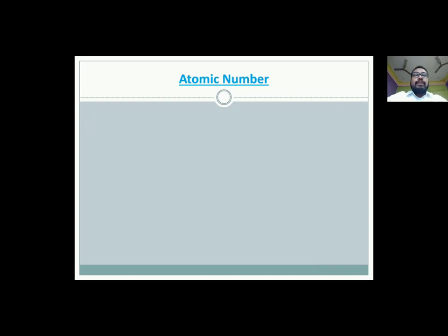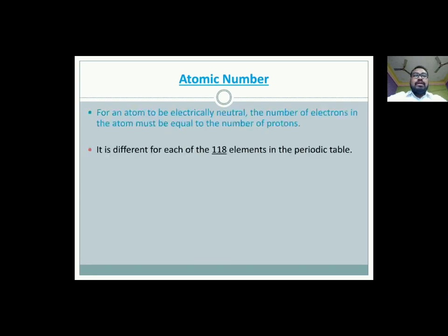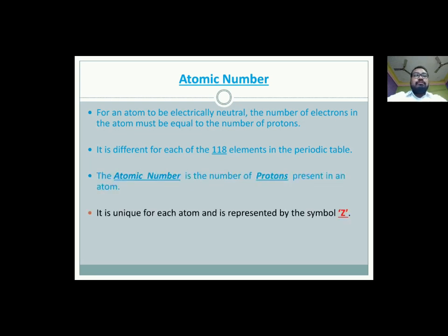Next we have atomic number. For an atom to be electrically neutral, the number of electrons in the atom must be equal to the number of protons. This number is called the atomic number and it is different for each of the 118 elements in the periodic table. So, the definition is the atomic number is the number of protons present in an atom and which is represented by the symbol capital Z.